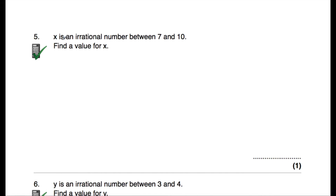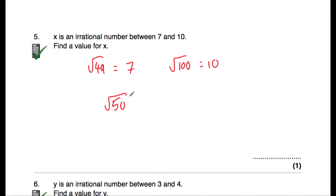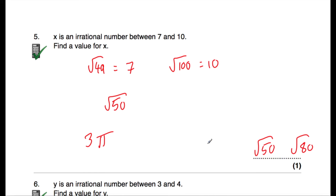Question number five says: X is an irrational number between seven and ten. Write down a value of X. We want to find a value between seven and ten. We could choose a number that's not a square number and square root it. We know the square root of 49 is seven and the square root of 100 is ten. So the square root of 50 would give seven point something — an irrational number between seven and ten. Alternatively, three pi equals about 9.something, so that's also between seven and ten. Examples: three pi, or the square root of 50, 80, or 99.